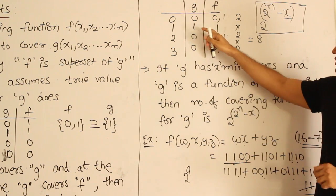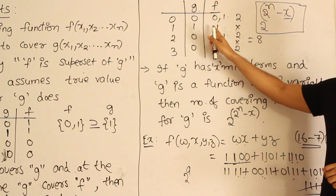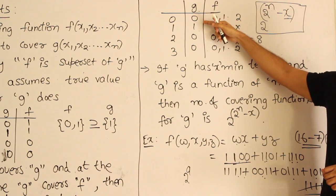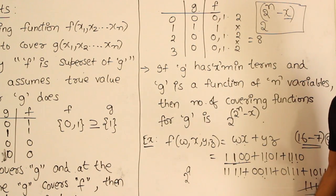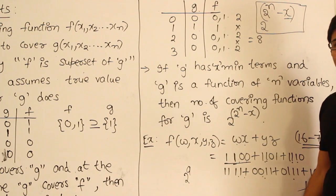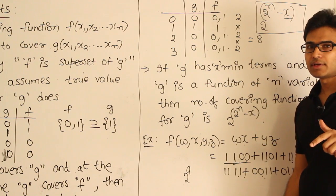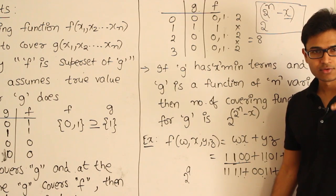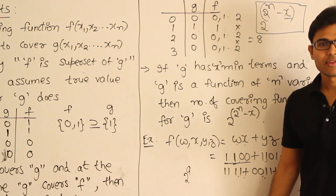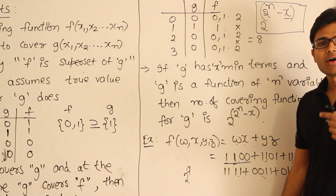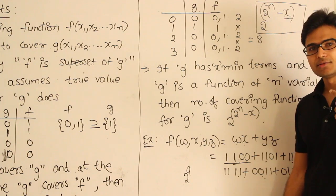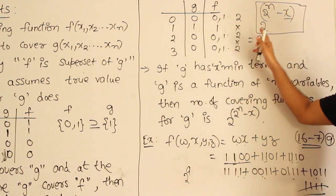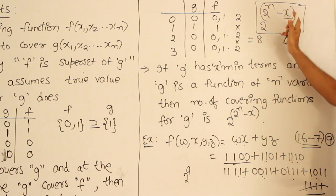Wherever g is 1, f has to be 1, so I am putting 1 there. Wherever g is 0, f could assume anything. How many minterms are there in g where g is 0? That is 2^n − x. At all these locations, f can assume either 0 or 1. Therefore 2^(2^n − x) functions will cover g.